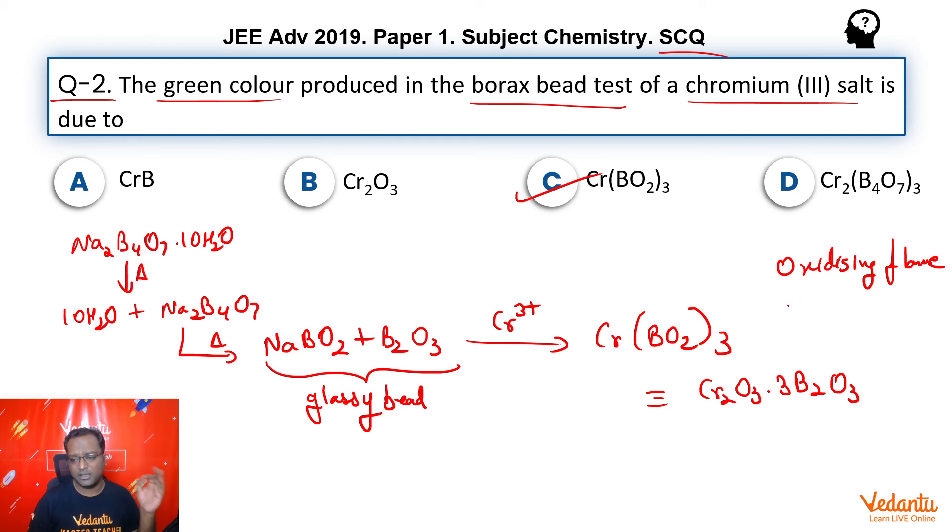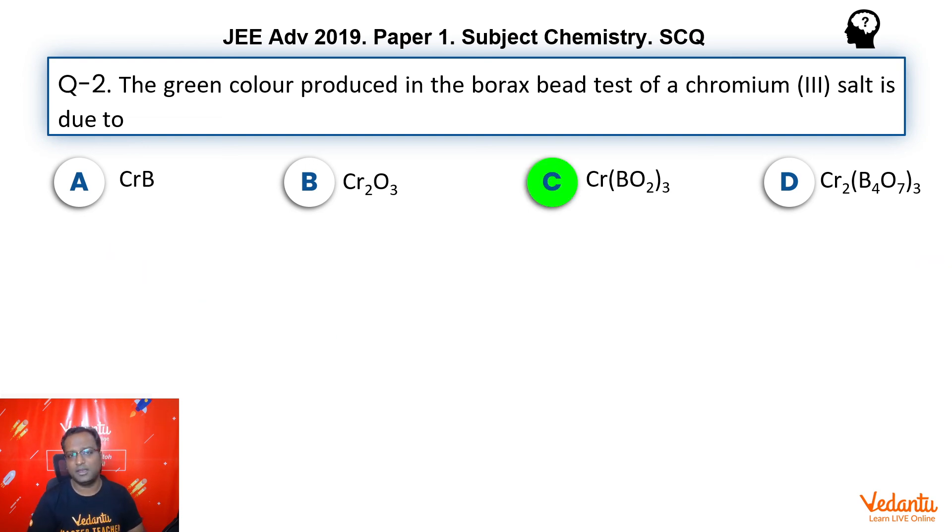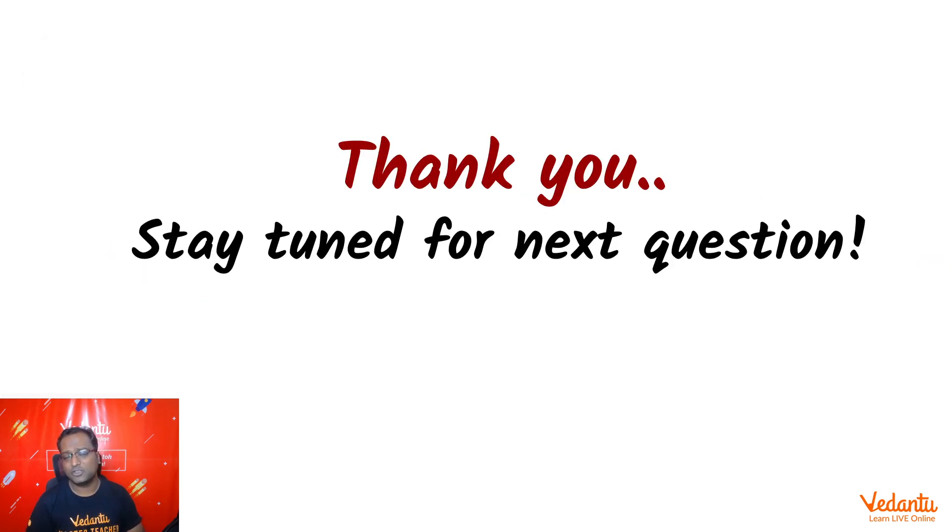In this particular case, even if it was a reducing flame, Chromium-3-plus stays as Chromium-3-plus in a reducing flame and we still would have got the same green color. So, the answer here is C. And thank you so much for joining us. Stay tuned for our next question.